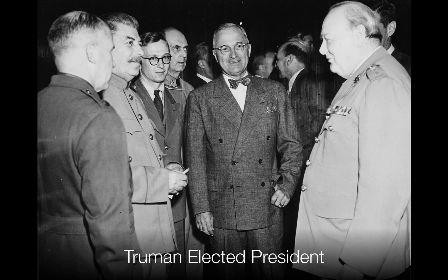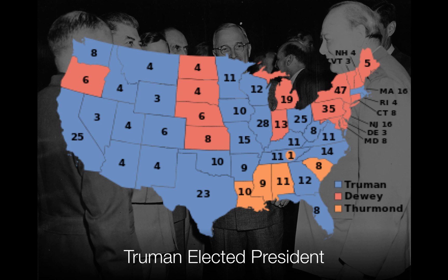We'll start with the election of Truman. Truman was really the first national and important politician to make civil rights a cornerstone of his campaign, and as a result he got a lot of support throughout the country. The orange states in the south represent the Dixiecrat Party, which broke away from the Democratic Party due to Truman being their nominee and his strong support for civil rights.